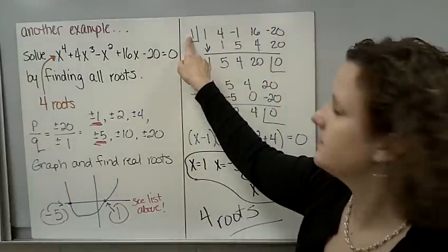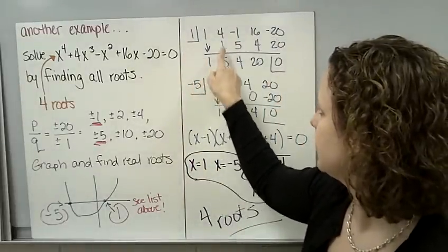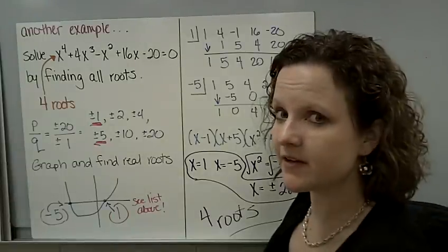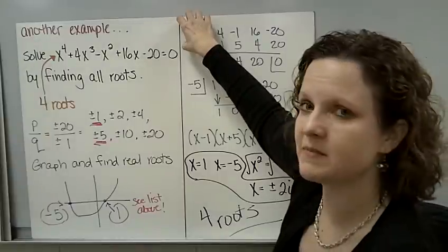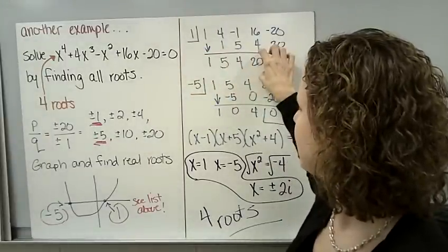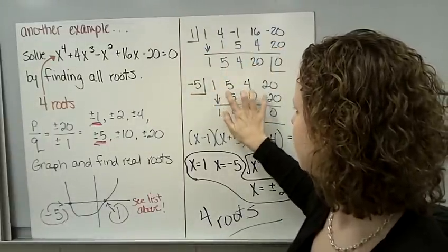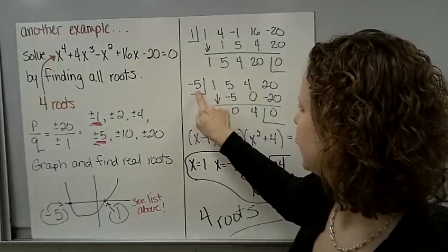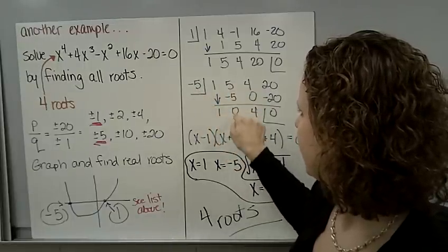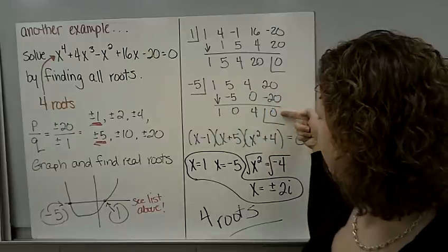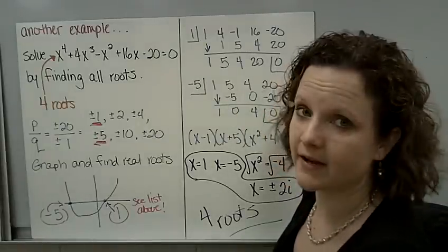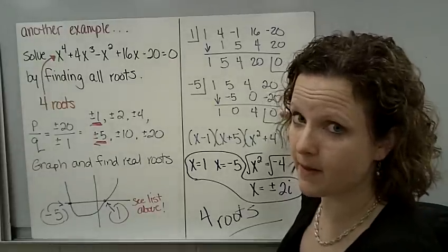Synthetic division. Multiply, add. Multiply, add. I have a remainder of 0. I'm not going to write this is going to be x - 1 times this polynomial. I can just go ahead and transfer these numbers down and do it again. -5. Multiply, add. Multiply, add. Multiply, add. Another remainder of 0. So I know both 1 and -5 are roots of that polynomial.